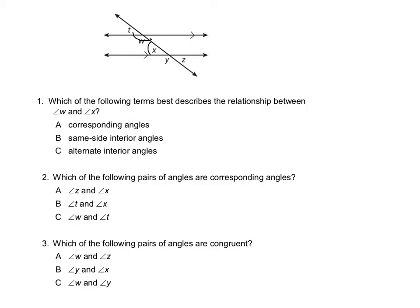We can't say it's corresponding, because corresponding is same side, same position, and these two are in different positions. We can't say alternate interior, because alternate means they're on opposite sides of the transversal. So the only one that it could be is same-side interior angles.